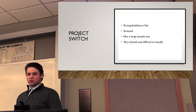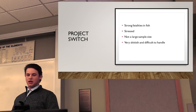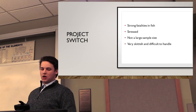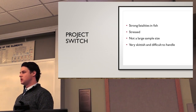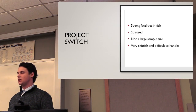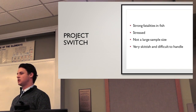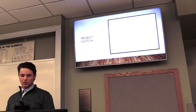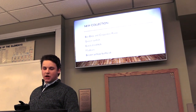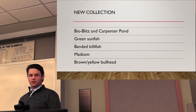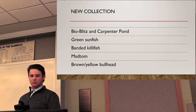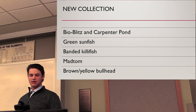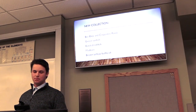After that, I had to switch my project due to some fatalities in fish in the smaller sample size, as listed here. A lot of the fish in my first experiment were pretty stressed out and very skittish and difficult to handle, which made the whole experiment pretty difficult to execute. So I moved on to a new collection — I got fish from BioBlitz and Carpenter Pond. The fish I used for my new experiment were green sunfish, banded killifish, madtom, and brown and yellow bullhead.